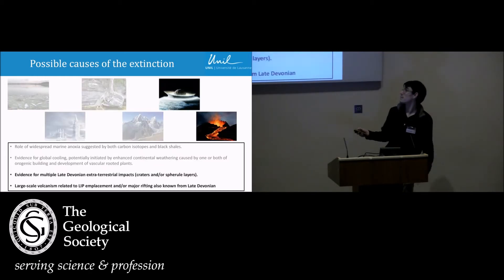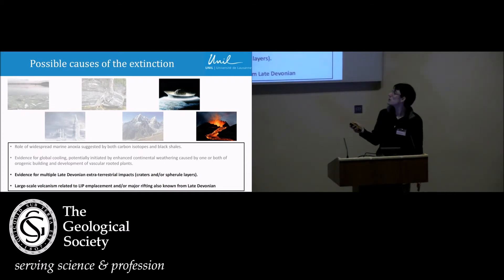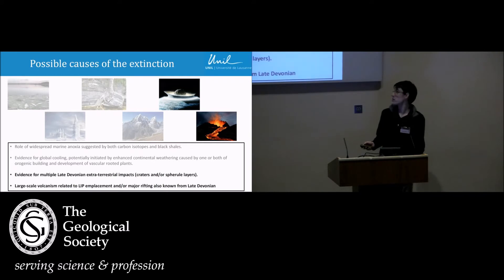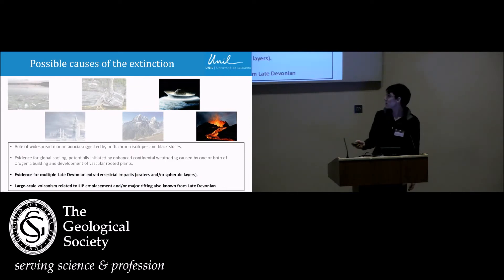The classic two ideas are impacts and volcanics. At least two large impact craters are known from the late Devonian, possibly more, and have been hypothesized as causes. There's also some good evidence for large igneous province volcanism in the late Devonian. And because of the strong correlation between large igneous provinces and Mesozoic extinction events, this is a good candidate idea for the Devonian as well.